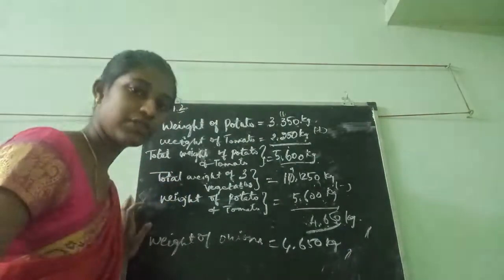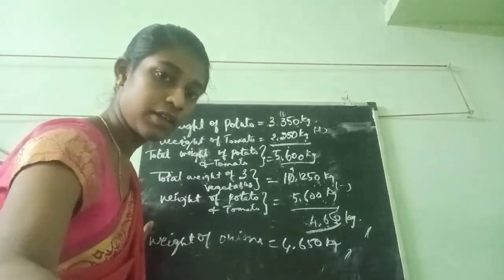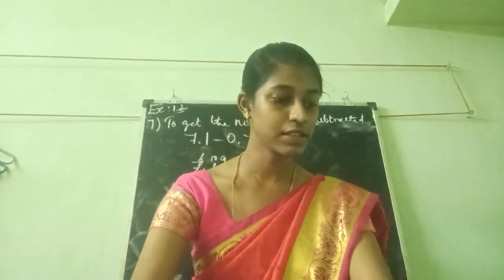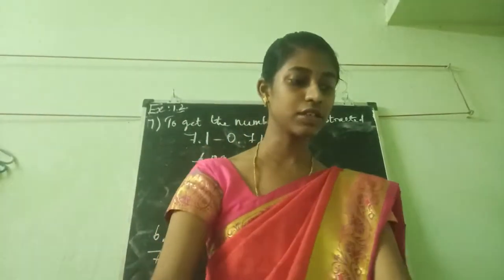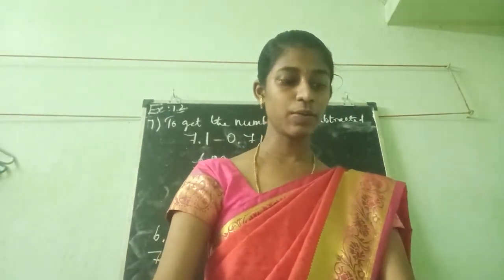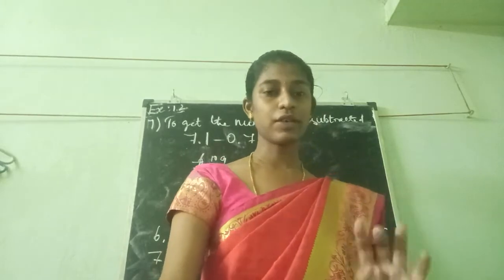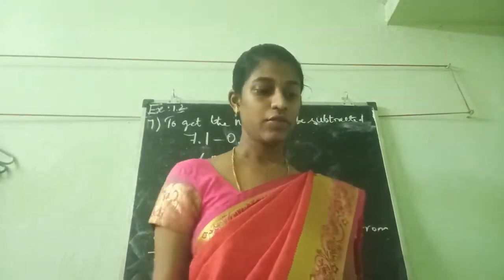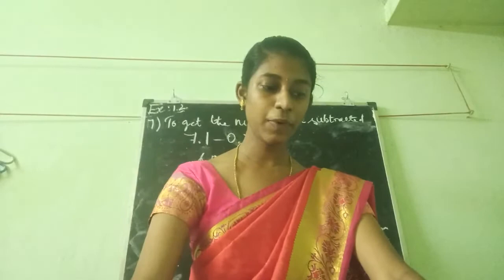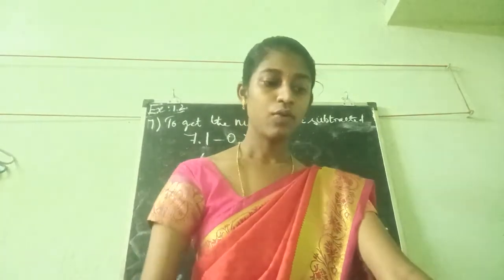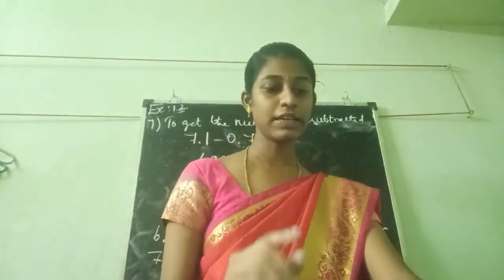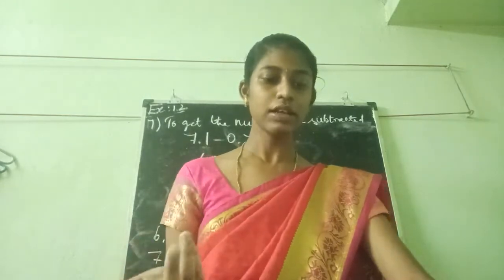Next we are going to see about the 7th sum. Reading the question: what should be subtracted from 7.1 to get 0.713? We want to find the value to be subtracted. That means in 7.1, what we subtract to get 0.713 — that minus value is what they are asking.